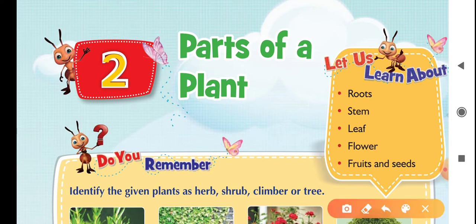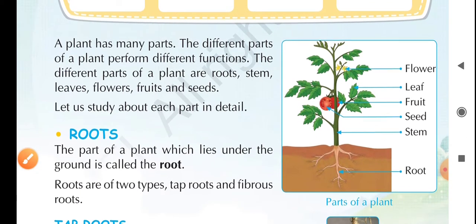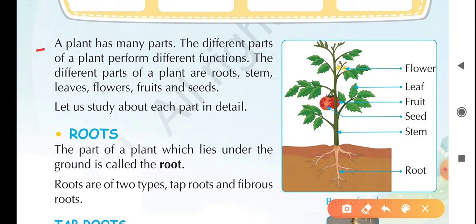Today we are going to study Parts of our Plants. As you all know, plants have different parts — like roots, stem, leaves, flowers, fruits and seeds. A plant has many parts, and the different parts of a plant perform different functions. The different parts of a plant are root, stem, leaves, flowers, fruits and seeds.